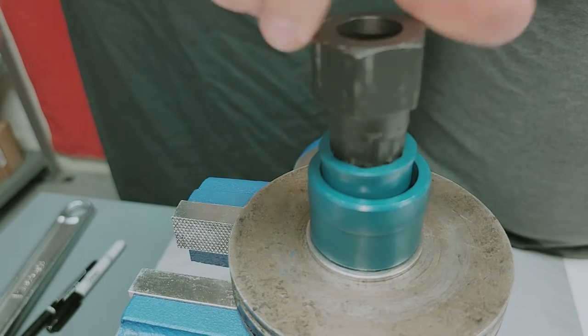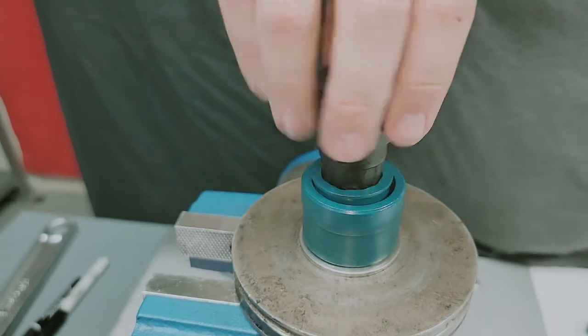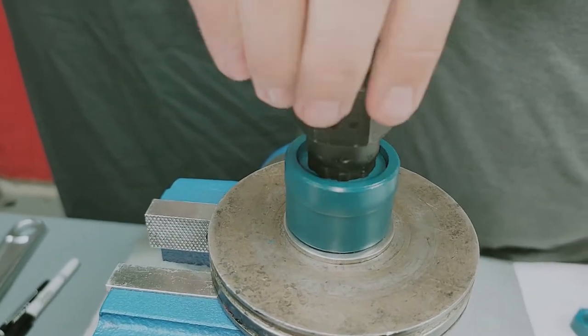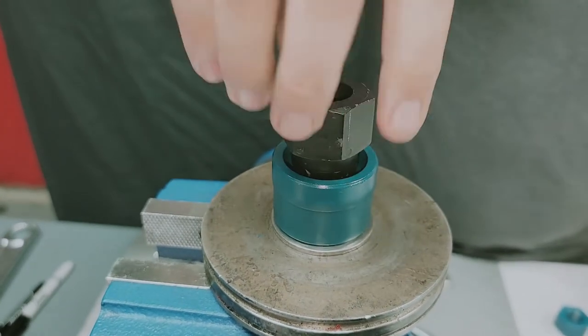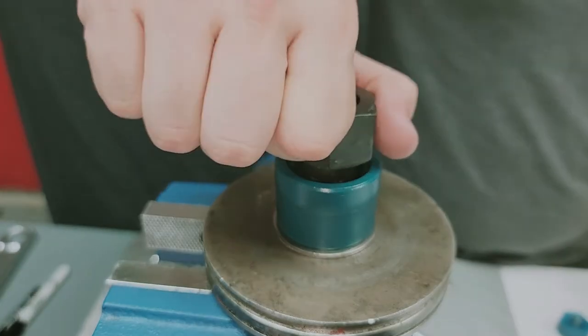In this case, you spin the socket around until it drops into the socket. You'll notice it drops in with a zero tolerance fit. Zero tolerance. As a matter of fact, it'll let you stick to the nut if you try it hard enough.